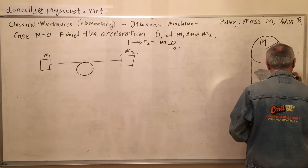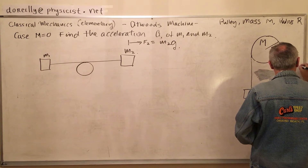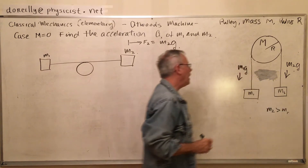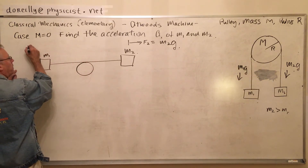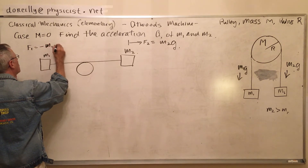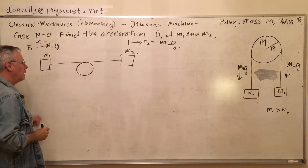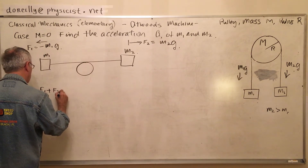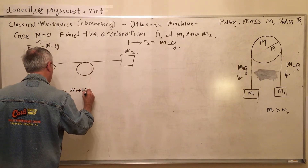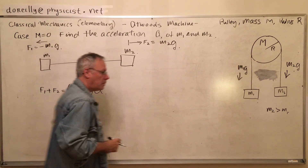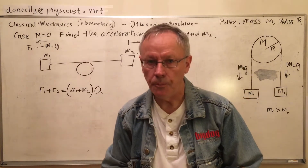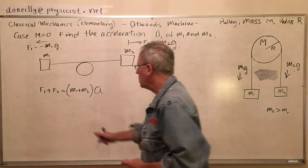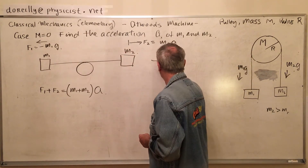And gravity pulling that one down. But pulling down effectively means that f1 is minus m1g, working that way. So now we add up all the forces. The total mass of the system is m1 plus m2. So the total mass of the system times the net acceleration will equal the sum of the forces on this object — because this is what we do.